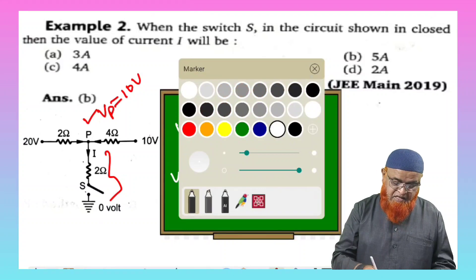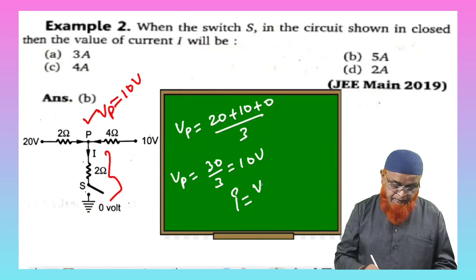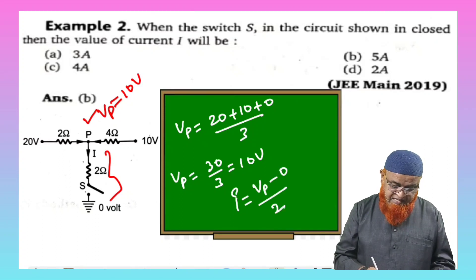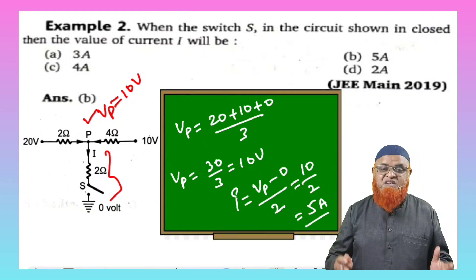So for that, the simple method is you can find out the current I is equal to VP minus 0, divided by resistance, that is two ohms. So already we got VP as 10, so 10 minus 0 by 2, which is going to be 5 amperes. So this is your shortcut method.